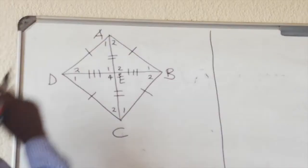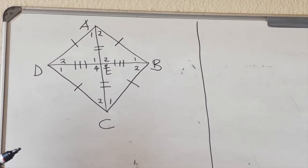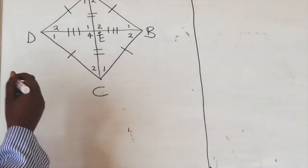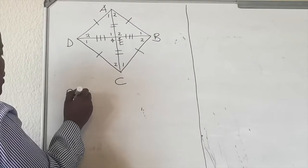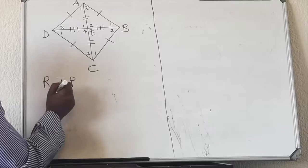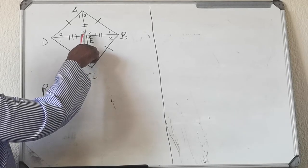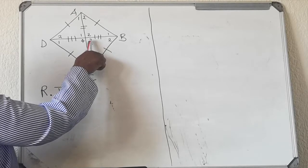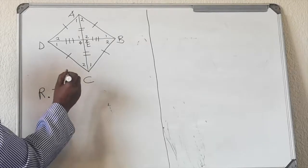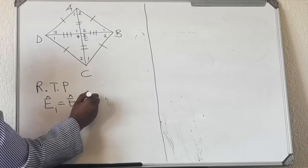This is the diagram we're going to use to prove: number one, that the diagonals bisect each other at 90 degrees; number two, that the diagonals bisect the corner angles. You remember when looking at a theorem and doing a proof, you write what you are required to prove. In this question you are required to prove that angle E1 equals angle E2 and both are equal to 90 degrees.